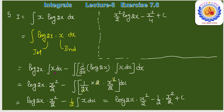Formula: log(2x)·∫x dx − ∫[derivative of log(2x) · ∫x dx]dx। log(2x) as it is, ∫x dx = x²/2। Derivative of log(2x) = 1/(2x) · 2 = 1/x। So: log(2x)·x²/2 − ∫(1/x)·(x²/2)dx = log(2x)·x²/2 − ∫(x/2)dx।